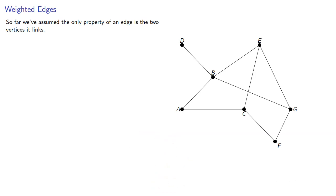So far we've assumed the only property of an edge is the two vertices it links. But in the real world, connections could have variable cost.